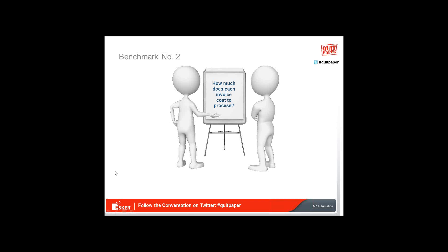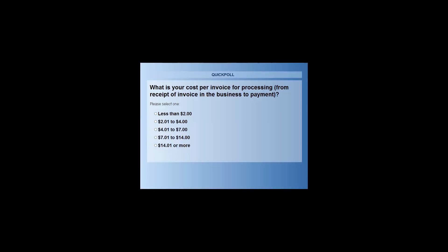How much does it cost for you to process each invoice? This covers all invoice types — PO and non-PO — and all formats: paper, OCR and data captured, and electronic. Is it less than $2 per transaction? $2 to $4? $4 to $7? $7 to $14? Or $14 or more? This is from the receipt of the invoice into your business through to the payment of that transaction — not including the cost of raising a purchase order.